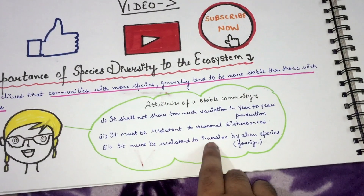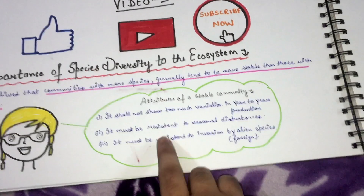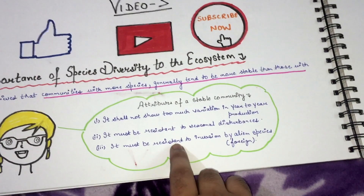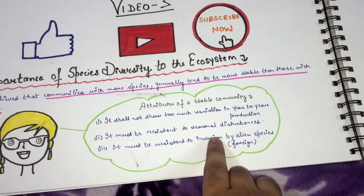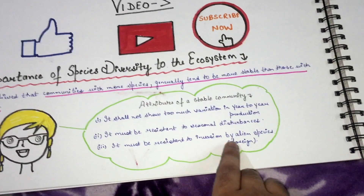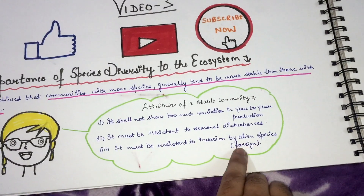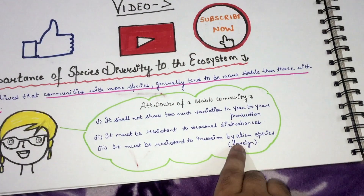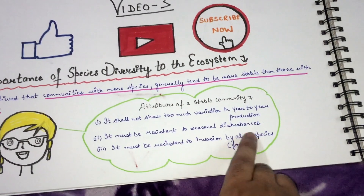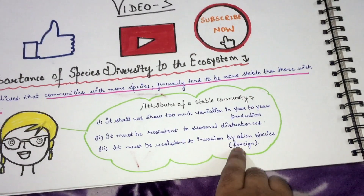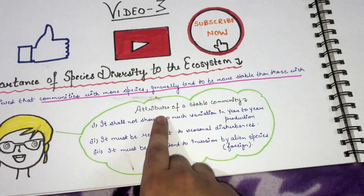Number three: the community must be resistant to invasion by alien — that is, foreign — species. So there are three attributes of a stable community.